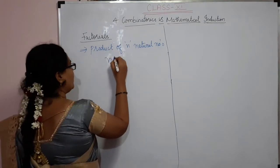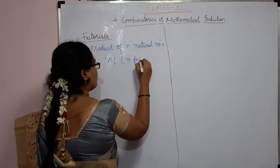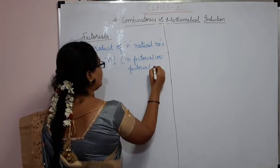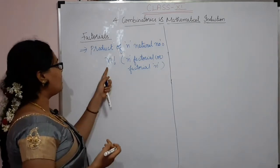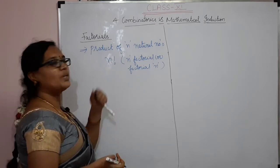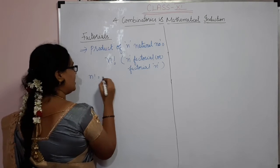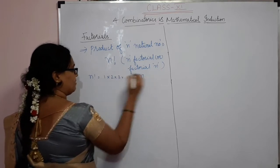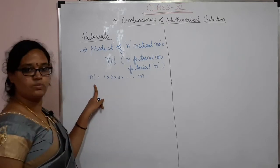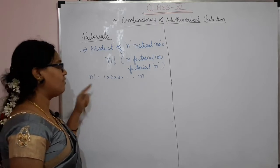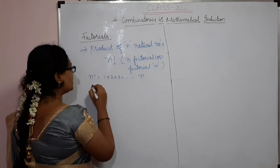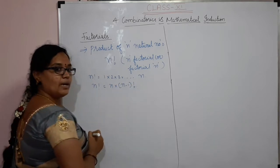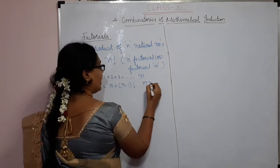How do we represent it? N factorial — we pronounce it as 'N factorial' or 'factorial N'. N factorial is 1 × 2 × 3 × ... × N, the product of N natural numbers. We can also represent N factorial as N × (N−1)! for N greater than 1.